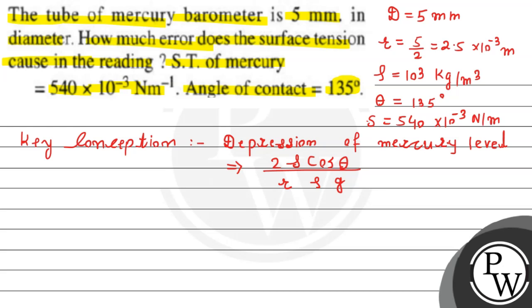Now we calculate the error. Error in barometer reading is the depression of mercury level. From the concept, it equals 2S cos θ divided by r ρ g. Let's substitute the values.